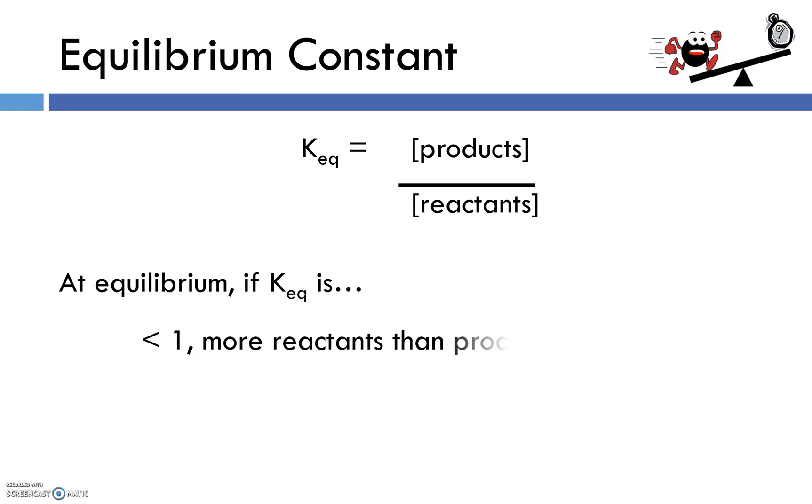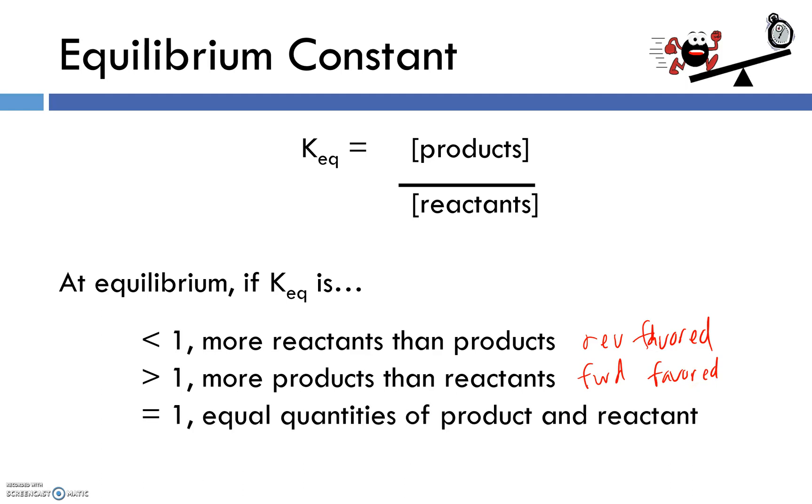At equilibrium, if KEQ is less than one, it means we have more reactants than products at equilibrium, and the reverse reaction was favored. We have a larger denominator than we do numerator, and that's going to give us a value less than one. If KEQ is greater than one, now the forward reaction has been favored. We have a greater quantity of products than we do reactants. And from time to time, you might run into a case where KEQ is equal to one, and we have equal quantities of product and reactants. So in that case, neither reaction was favored.